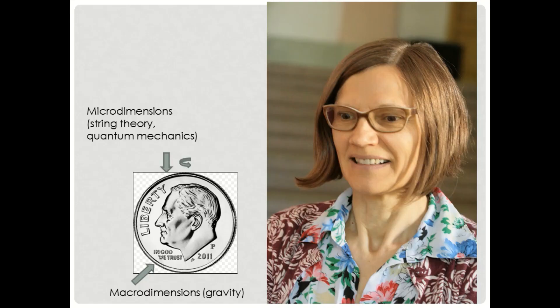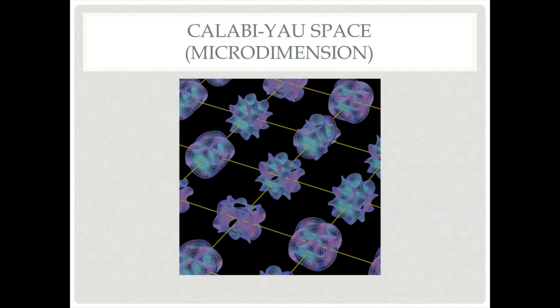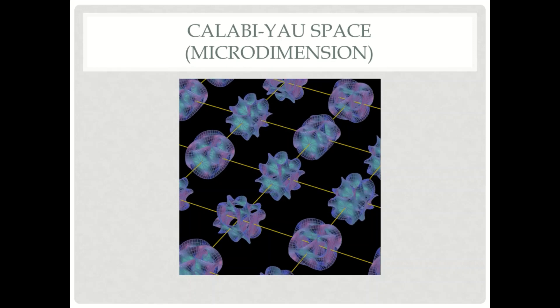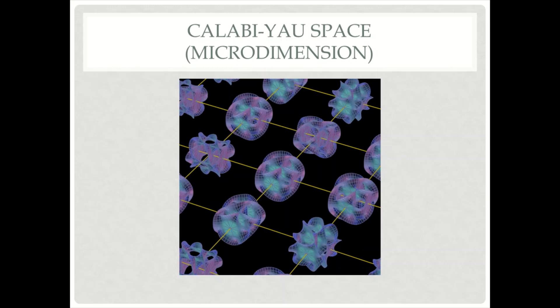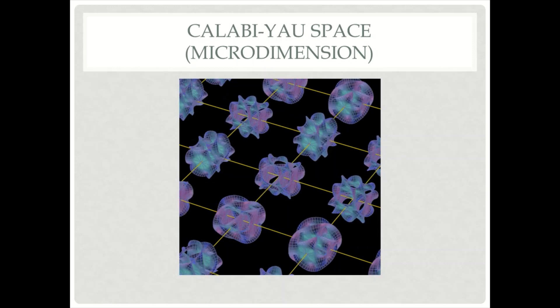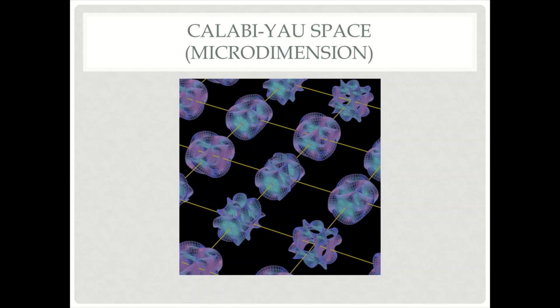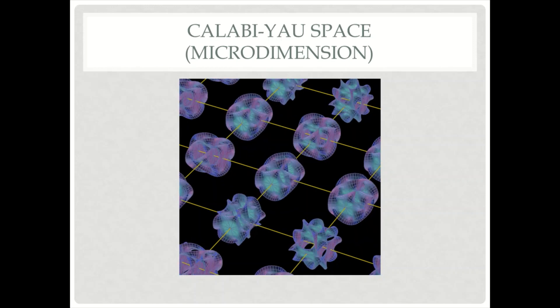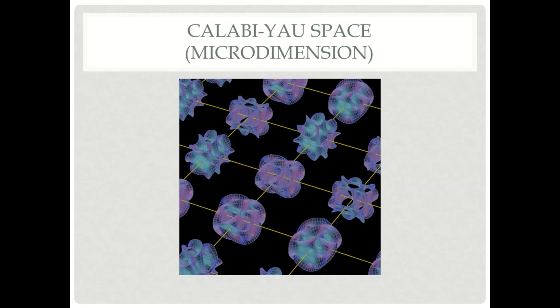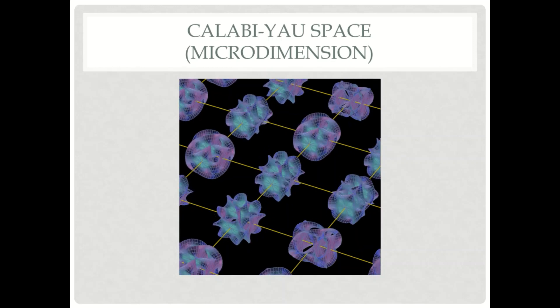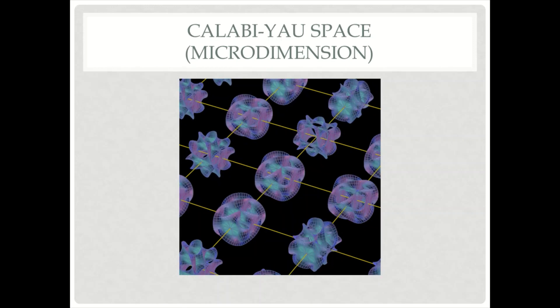I will model the cosmos with a coin. String theory tells us that particles are energy vibrations occurring within folded up so-called micro dimensions. These micro dimensions are thought to take the form of a six-dimensional Calabi-Yau space, as shown here. Although in this image the particles appear separate and isolated, in reality they are interconnected and can form entanglement.